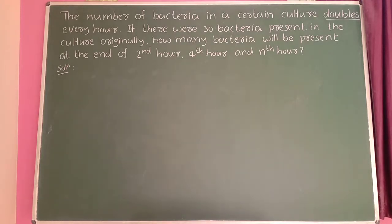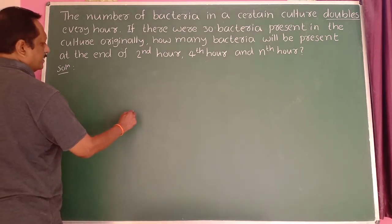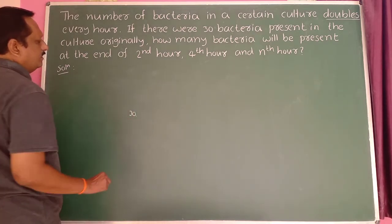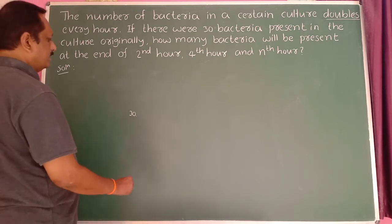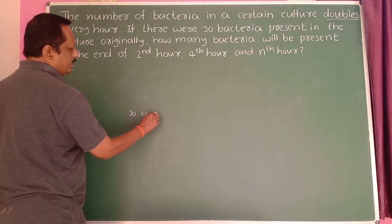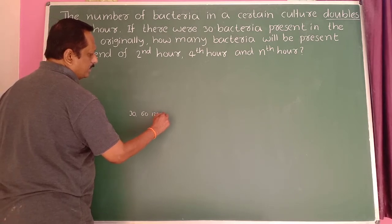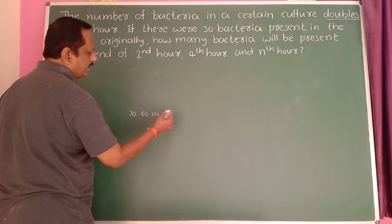The number of bacteria in a certain culture doubles every hour. If there were 30 bacteria present in the culture originally, how many bacteria will be present at the end of the second hour, fourth hour, and tenth hour? Beginning: total there are 30 bacteria. At second hour, 60; at beginning of fourth hour, 120 — it doubles, so we continue.